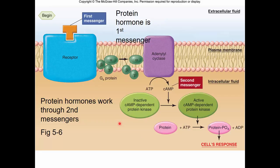Here's an example of a second messenger system. The first messenger - such as glucagon, insulin, or growth hormone - binds to its receptor. A heterotrimeric G protein undergoes changes, activates an enzyme called adenylyl cyclase, which catalyzes the conversion of ATP to cyclic AMP. Cyclic AMP is the second messenger, turning on cyclic AMP-dependent protein kinase, also called protein kinase A. Kinases are enzymes that phosphorylate things, either turning them on or off, and changing the reactions happening inside the cell.